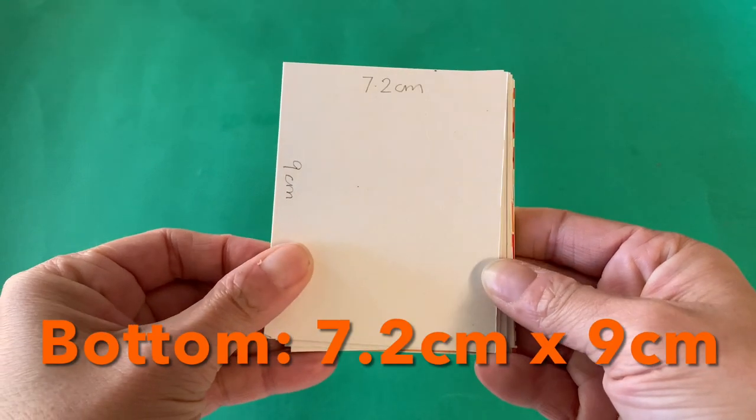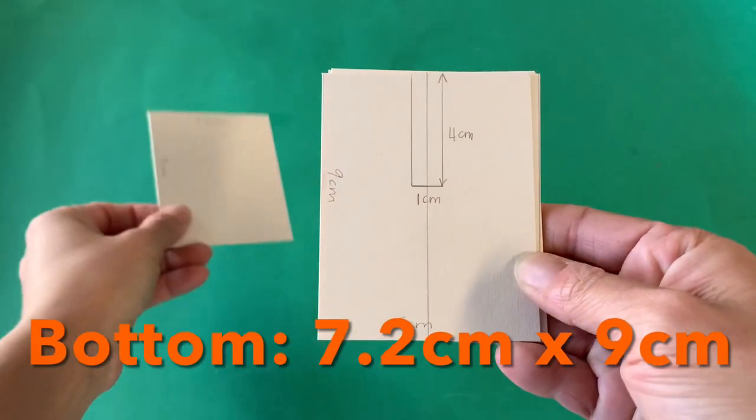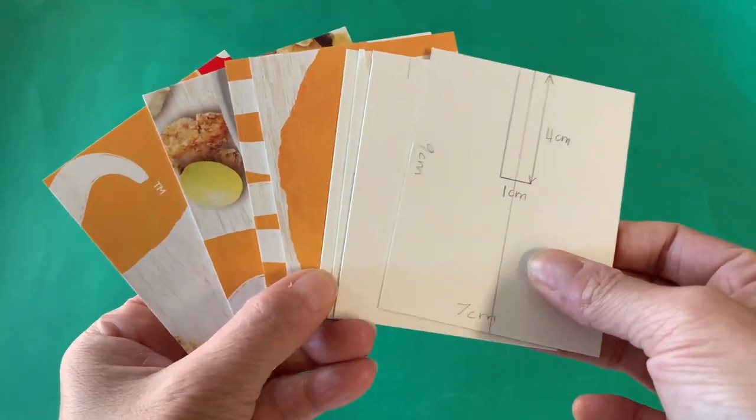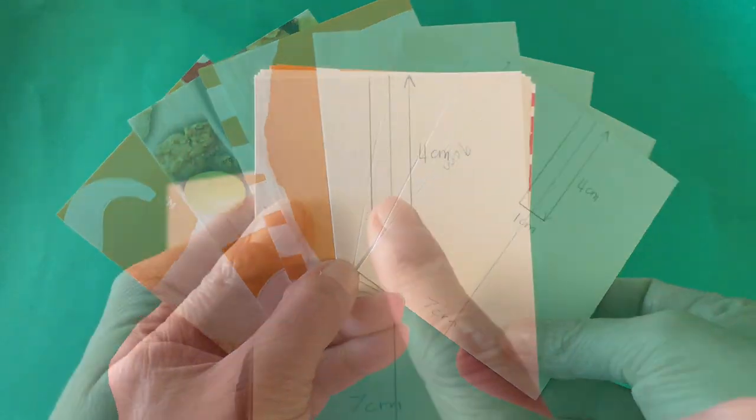Cut a rectangle for the bottom of the till. The exact width of yours will depend on the width between the creases in your cereal box. Also cut eight slightly thinner rectangles for the base.